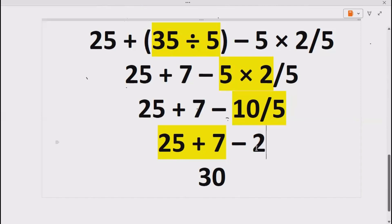Now we have 25 plus 7 minus 2. We know 25 plus 7 gives us 32. 32 minus 2 gives us 30.